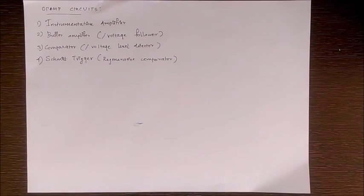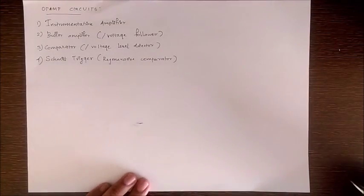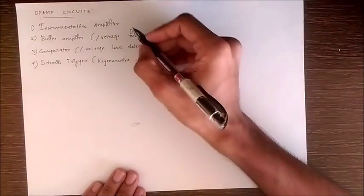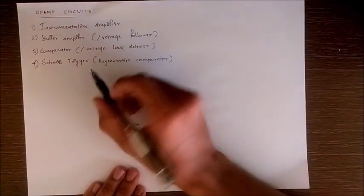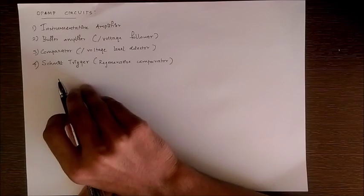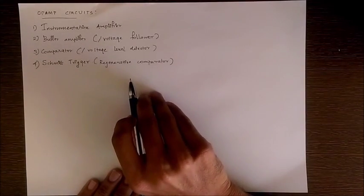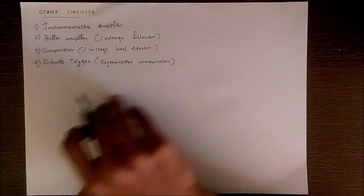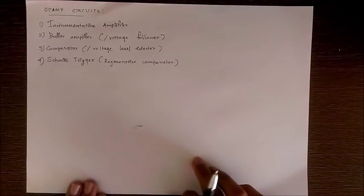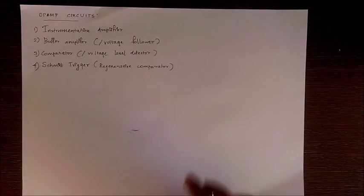Hello everyone. In this third and final part of the op-amp circuit tutorial, we will be learning four other important op-amp circuits: the instrumentation amplifier, the buffer amplifier also known as voltage follower, the comparator also known as the voltage level detector, and finally the Schmitt trigger, also known as the regenerating comparator.